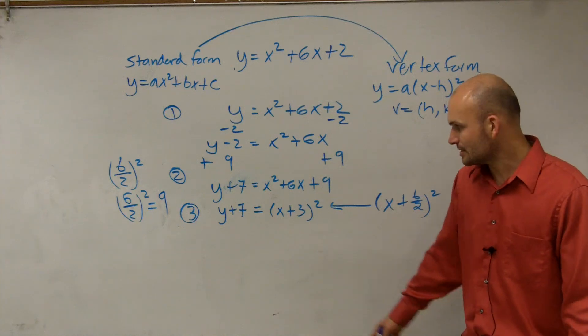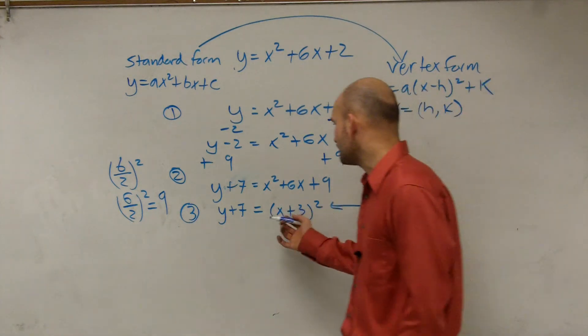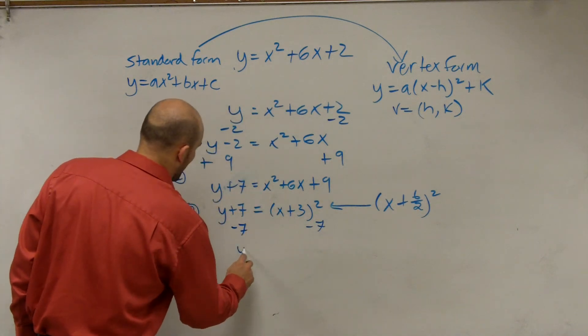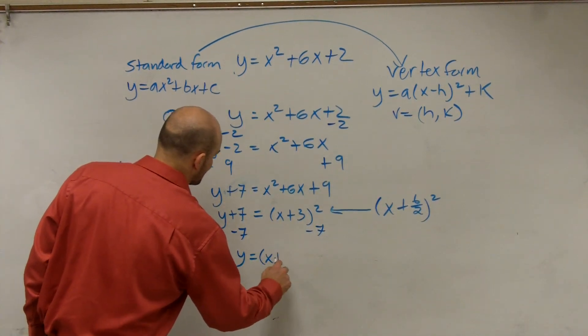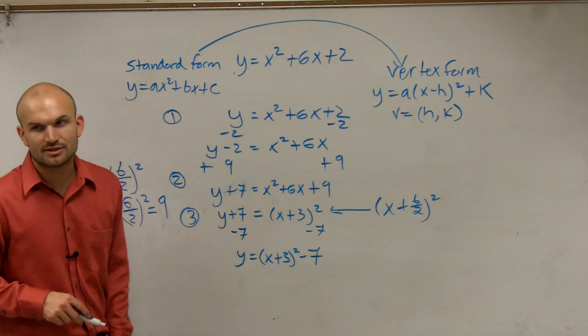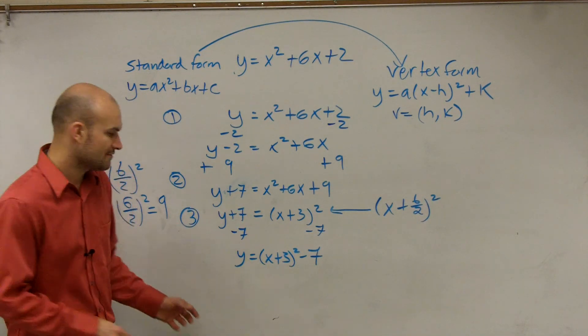Now, to finalize our answer, we just got to get the y by itself. So you subtract 7. Therefore, I get y equals x plus 3 squared minus 7. Can I now tell what the vertex is? Yeah. And the vertex is?